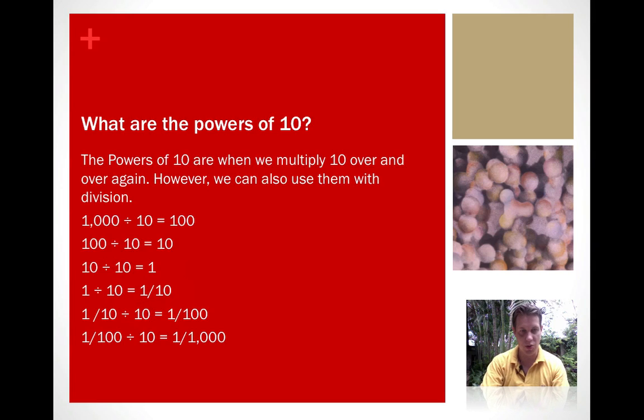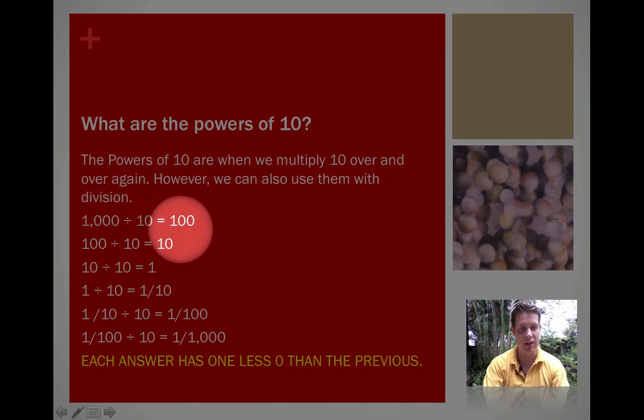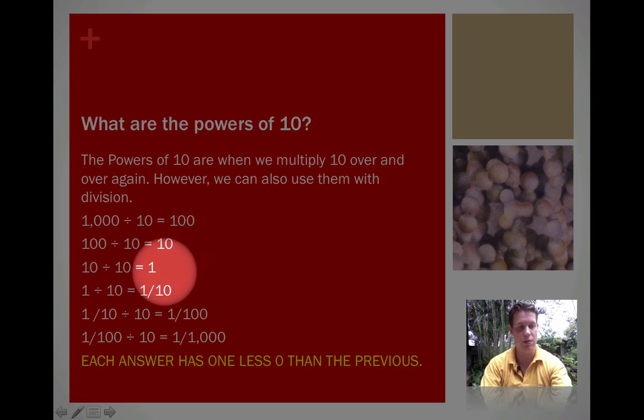So some important things to notice with this. Each answer has one less zero than the previous. So when we began, 1,000 divided by 10 was 100. If we divide by 10 again, our answer is 10. And if we divide by 10 again, our answer is 1. So we lost a zero each time.